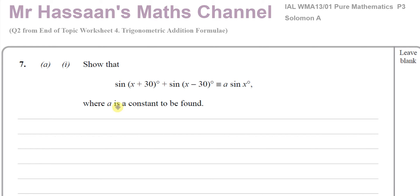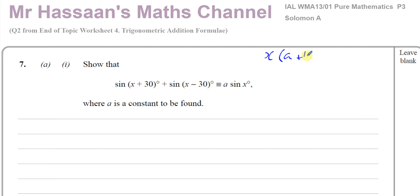One of the things that's really important to realize is that we do not expand something like this as if it were an algebraic expression, where sine is a term on its own and you just say sine times x and sine times 30. On its own, sine doesn't mean anything — it has to be the sine of an angle. Without the angle it has no meaning. So this is the sine of the whole angle (x+30), and you cannot expand it the way you would with an algebraic expression like x(a+b).